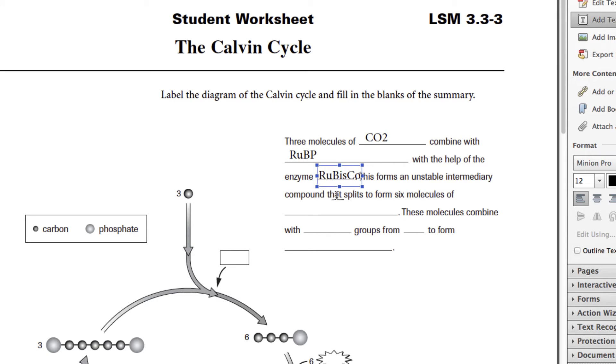This forms an intermediary compound that splits to form six molecules of 3-PGA. This looks like professional golfing association, but it's called 3-PGA, which stands for 3-phosphoglyceraldehyde. This little molecule right down here, you get six of those. Six of these 3-PGAs. So there's a lot of rearrangement that takes place within these molecules.